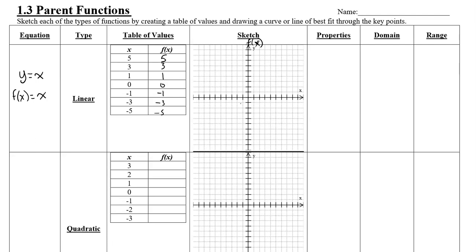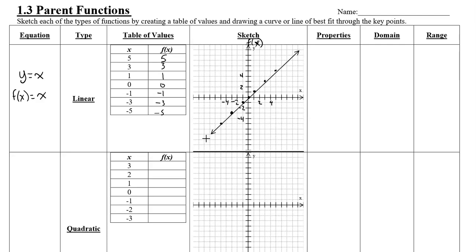We can plot those points — assuming every grid square is 1, so this is 2, 4, and so on. I'm going to plot those points. You don't even need to plot all of them to see what this looks like. It's going to look something like this: 0,0; negative 1, negative 1; negative 3, negative 3; and negative 5, negative 5. Then I put a line through those points, and that represents the line y equals x, or f of x equals x.